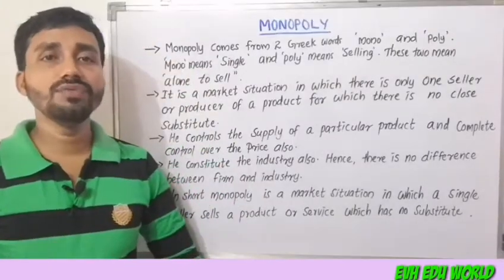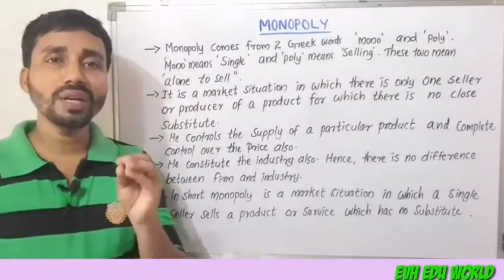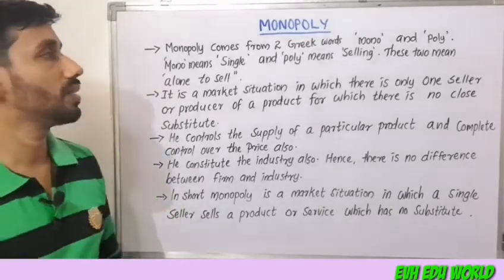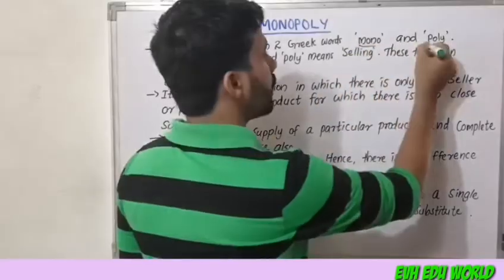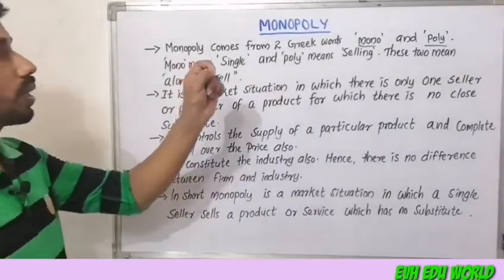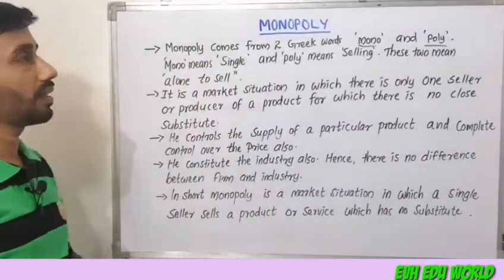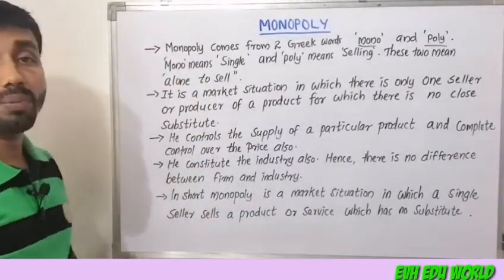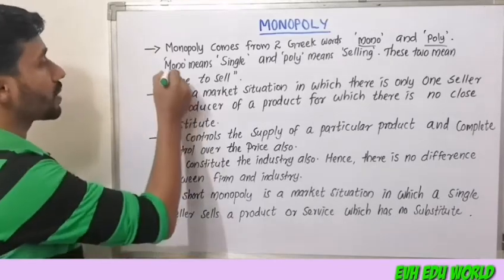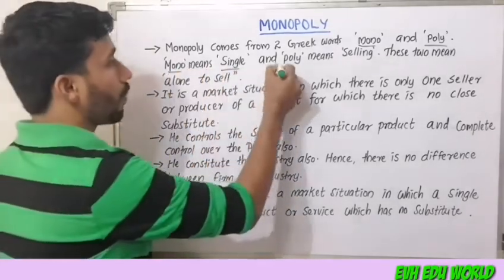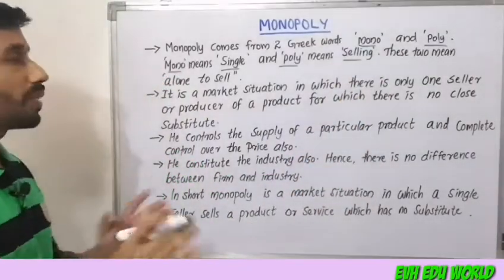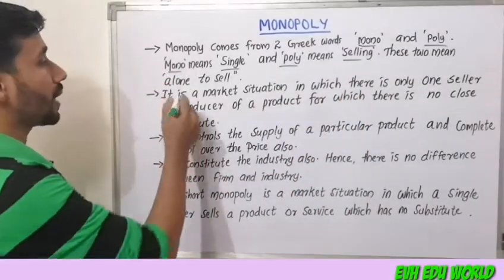The word 'monopoly' is derived from two Greek words: mono and poly. Mono means single and poly means selling, so together they mean 'alone to sell.'